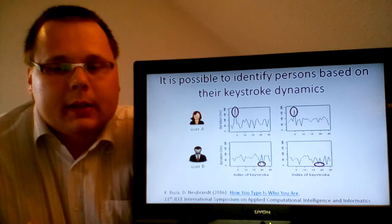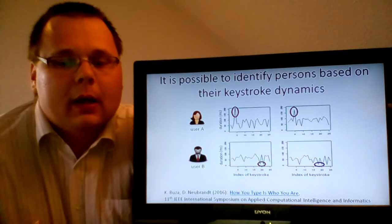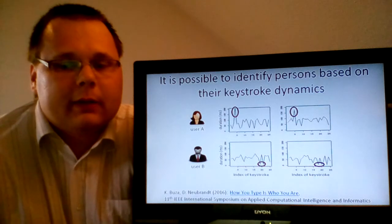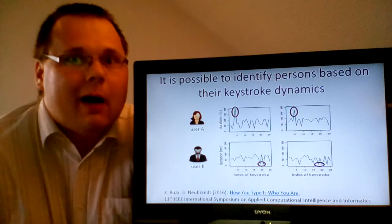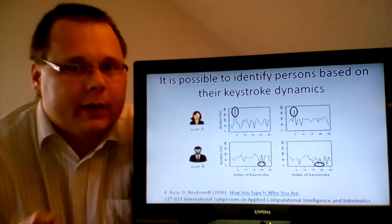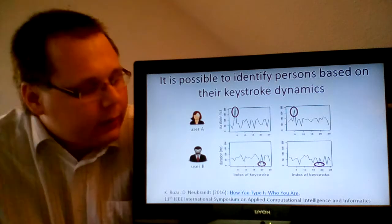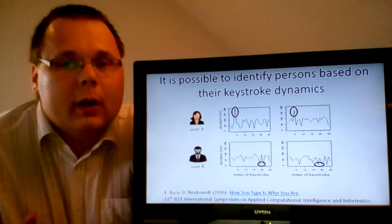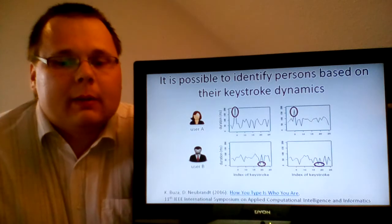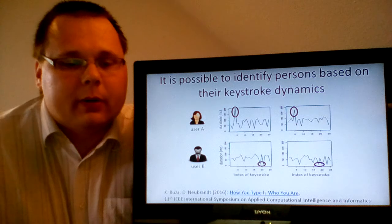However, it is important to note that researchers generally agree that, in principle, person identification is possible based on keystroke dynamics. Of course, how well it works depends on various factors, such as the number of users that have to be distinguished, the length of the text that are typed by these users, or the recognition algorithm that is used for recognizing the users.